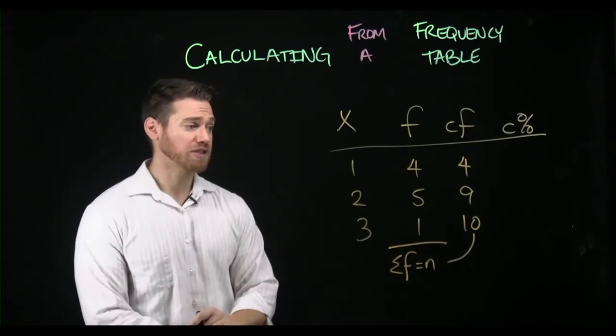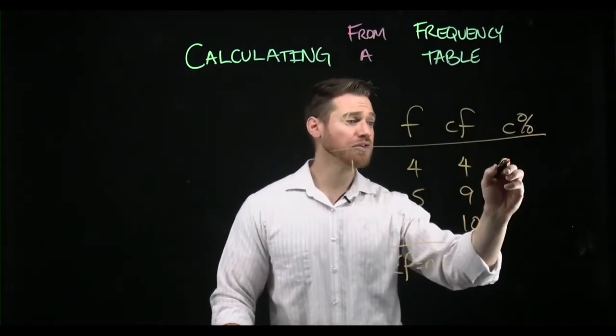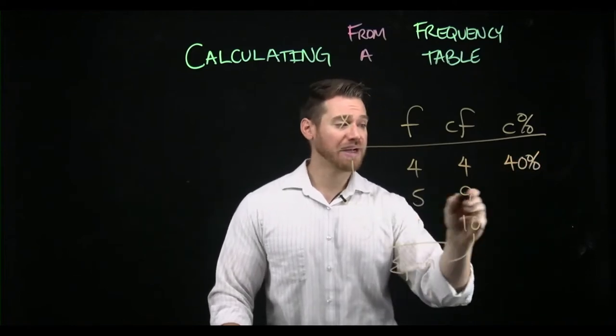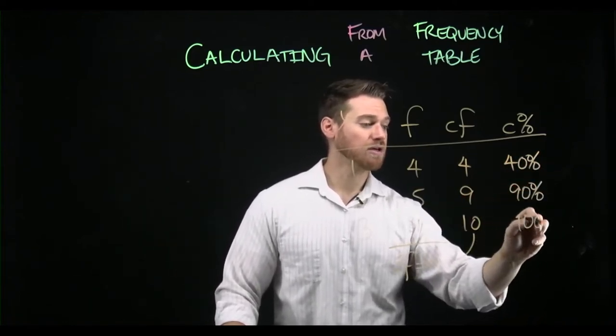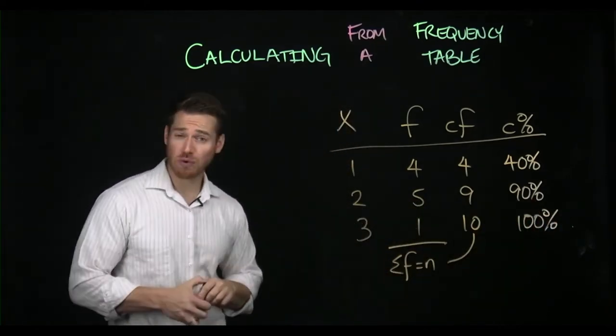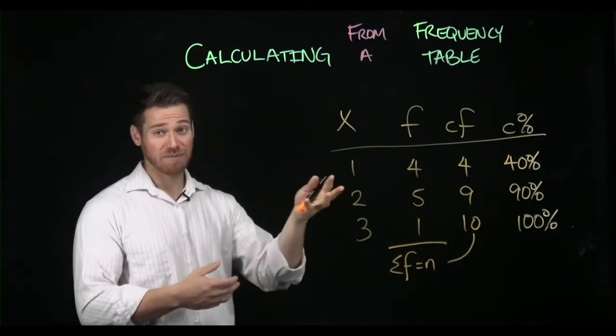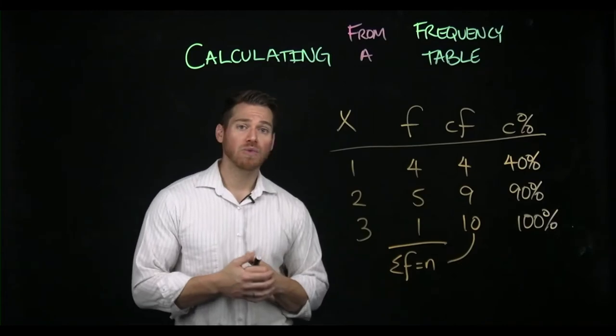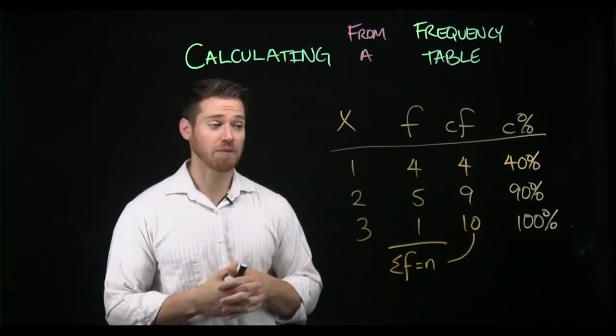So then if we do cumulative percentages, we say, well, what percentage of scores at each point? So at one, you are at 40% cumulative. When we get to two, we're at 90% cumulative. And when we get to three, we are at 100% cumulative. So 100% of scores are the value three or lower, is all that means. Whereas 90% of scores are the value two or lower. So we can do things like this in terms of calculating cumulatives as well from our table.